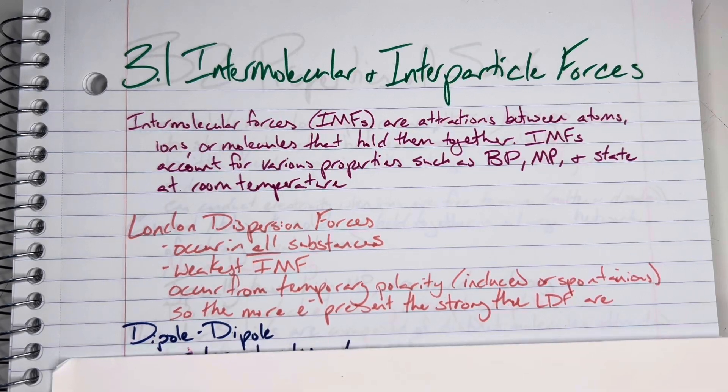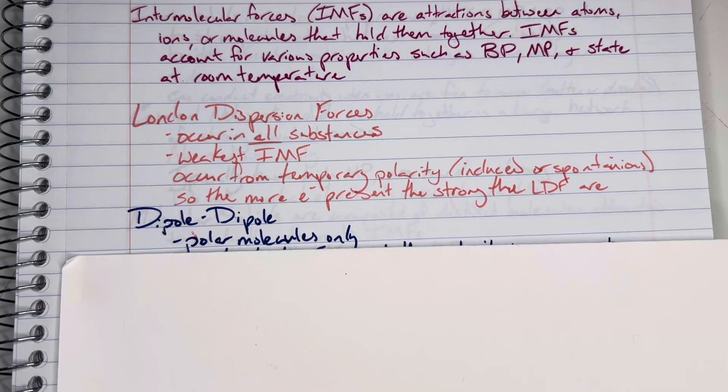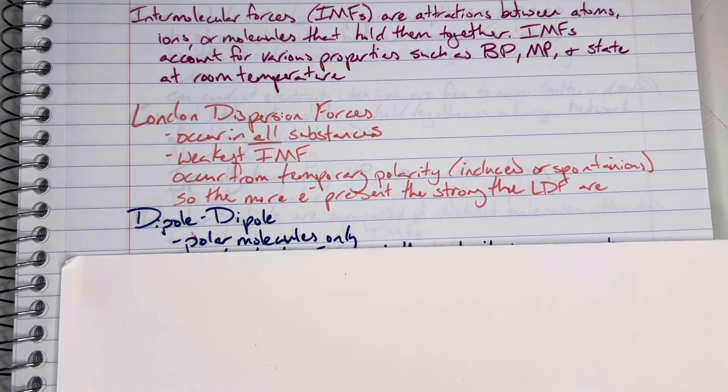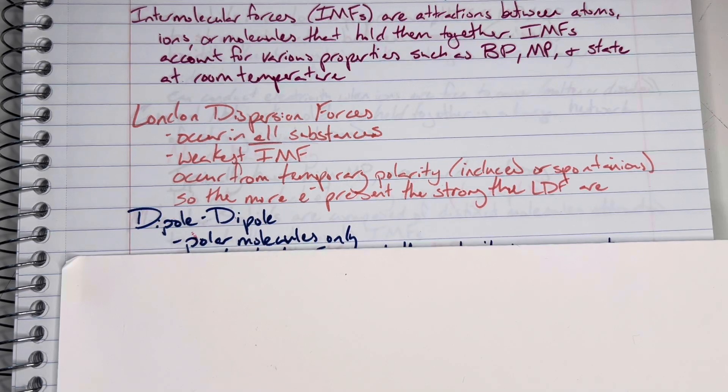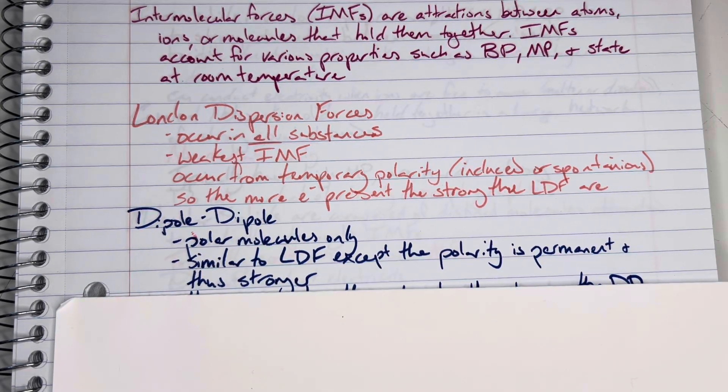Next up is dipole-dipole. Dipole-dipole intermolecular forces only happen between polar molecules. You have to be polar in order to be able to experience dipole-dipole forces. This is similar to London dispersion, but instead of them being temporary dipoles, they are permanent.